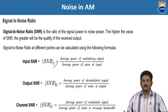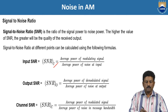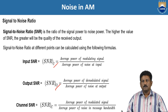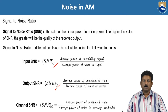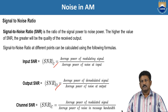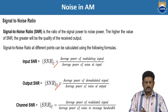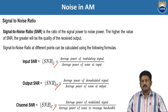Similarly, SNR(O) is the signal-to-noise ratio at the output side. It gives the average power of the demodulated signal at the output side divided by the average power of the noise at the output side. The third type is the channel SNR. Since the signal travels from source (input side) to destination (output side) through a channel, SNR(C) is the average power of the modulated signal divided by the average power of the noise in the message bandwidth during transmission.